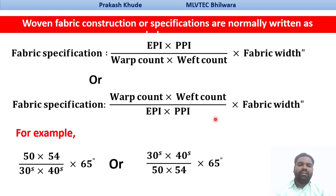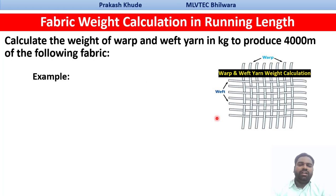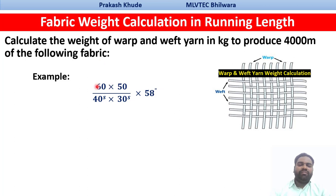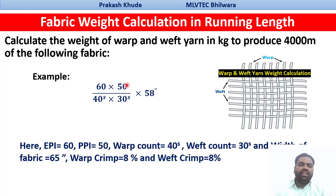Now we will see how you can calculate the weight of warp and weft for the production of a particular length of fabric. In this example, we need to calculate the weight of warp and weight of weft in kg to produce 4000 meters of the following fabric. The construction parameters are: ends per inch is 60, picks per inch is 50, warp count is 40, weft count is 30, fabric width is 58 inches, and warp crimp and weft crimp are 8 percent.